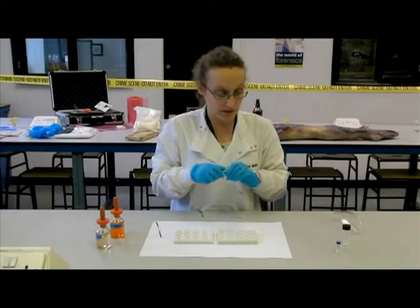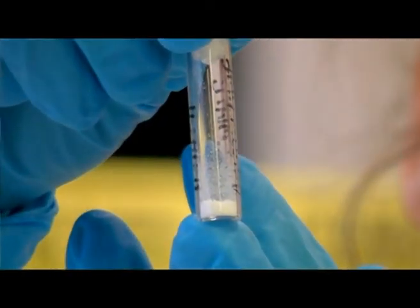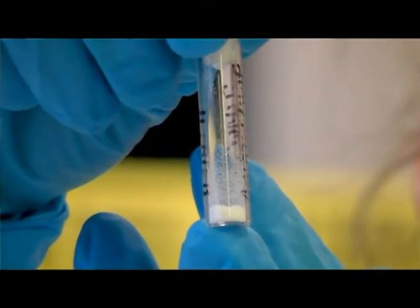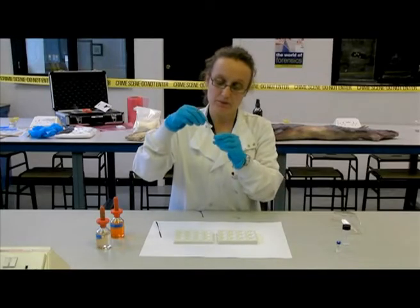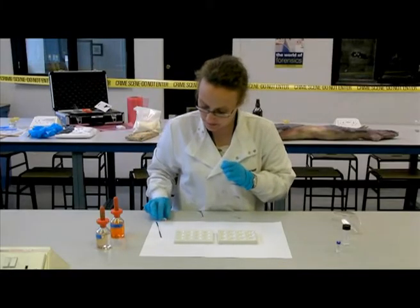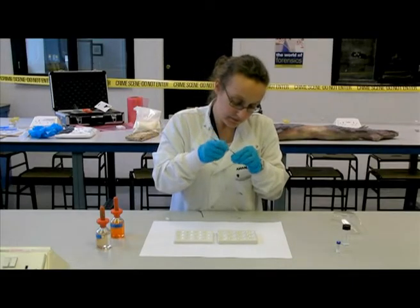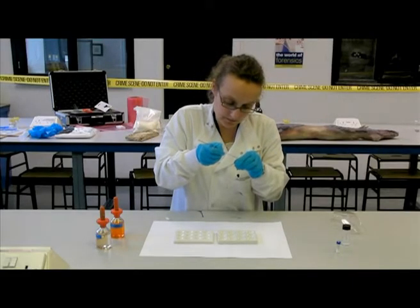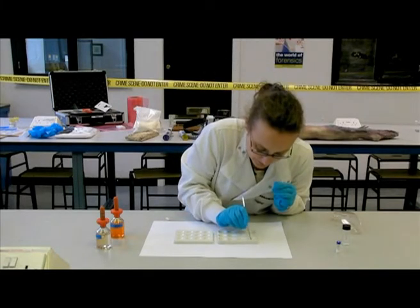The first drug I'm going to look at today will be amphetamine. It's part of a street sample of amphetamine. So what we need to do is obtain a very small sample from this little vial using our spatula. We place that into the blank well of a spot plate.